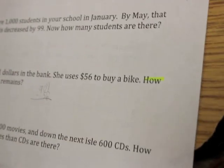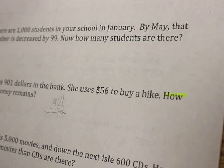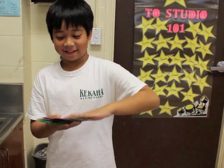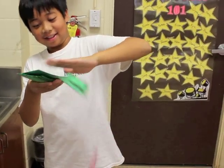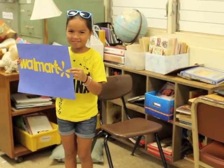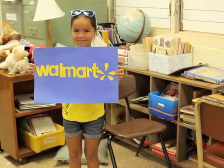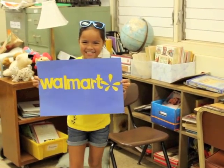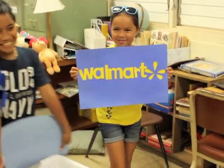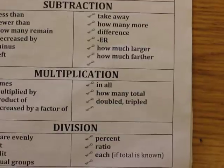Like how much larger, how much farther. 1,000 students in your school, decreased by 99 — now how many rule? 901. Dollars in the bank, take away 56 — how many remain? Walmart has 5,000 movies, and down the next aisle, 600 CDs — someone tell me please, how many more movies than CDs?